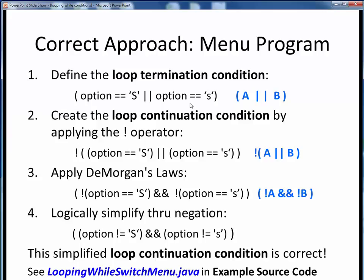Next, turn the more easily expressed loop termination condition into the required loop continuation condition by simply negating the entire expression. So, in our example, we simply apply the not operator to the entire prior expression, as shown here. Note that this specific example is of this general form shown in blue.